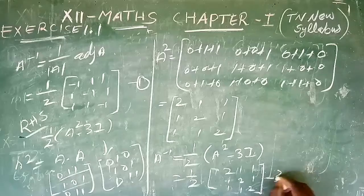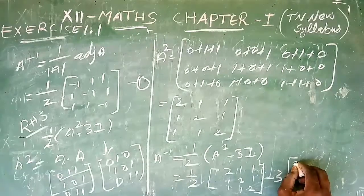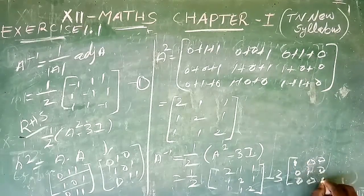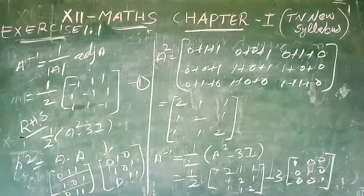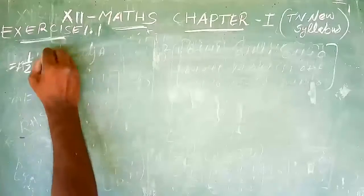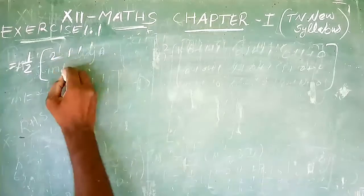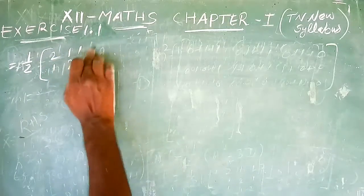The identity matrix multiplied by 3 gives [[3, 0, 0], [0, 3, 0], [0, 0, 3]]. This is subtracted from A².